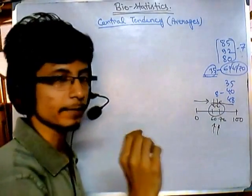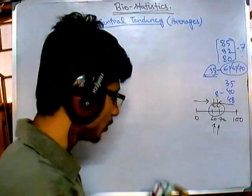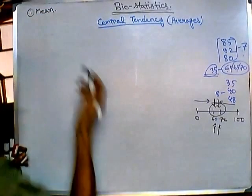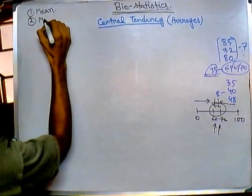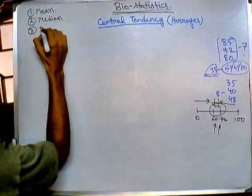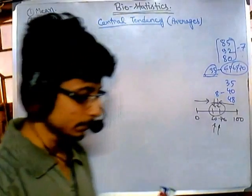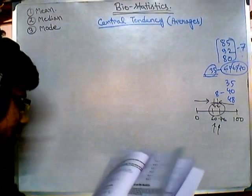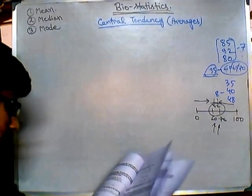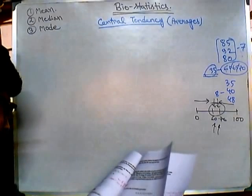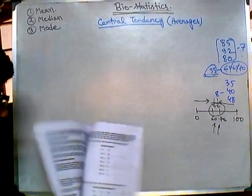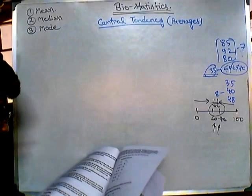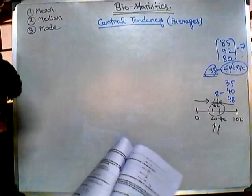We can also call the central tendency the averages. For all types of averages, we divide them into three different parts: first is the mean, also called the arithmetic mean or simply the average value; second is the median; and third is the mode. We will see different examples on these, starting with non-frequency data (the easier ones), then frequency type, and then grouped data.